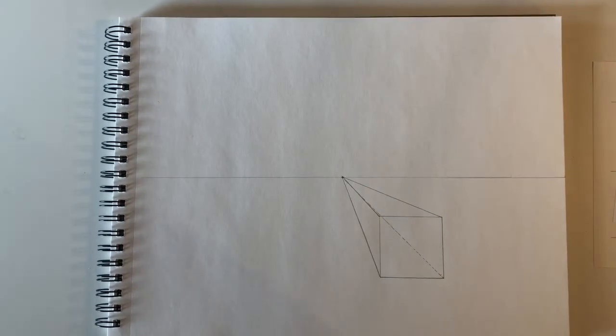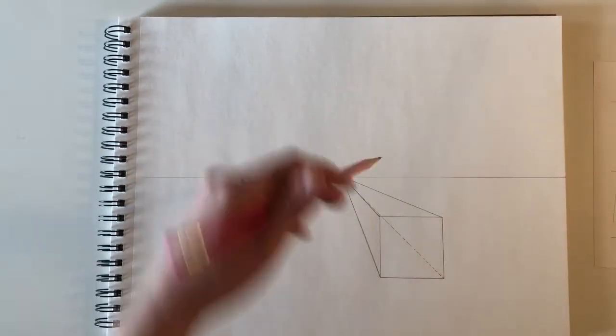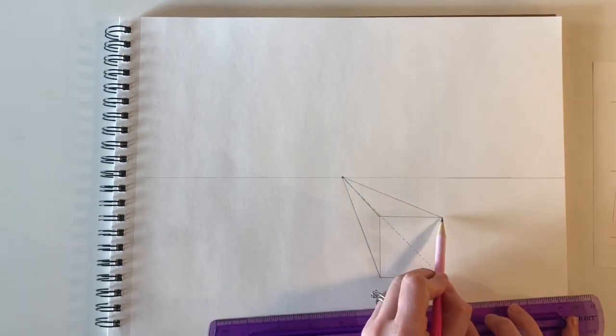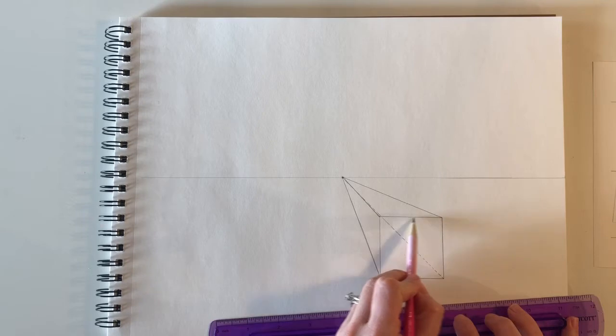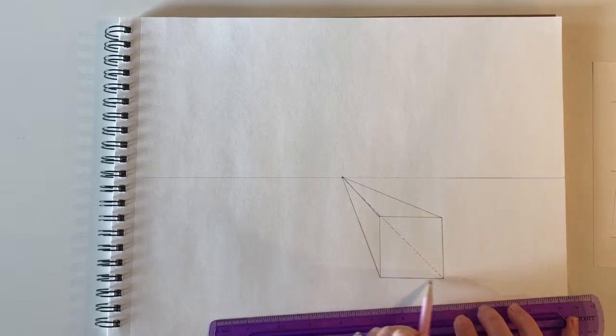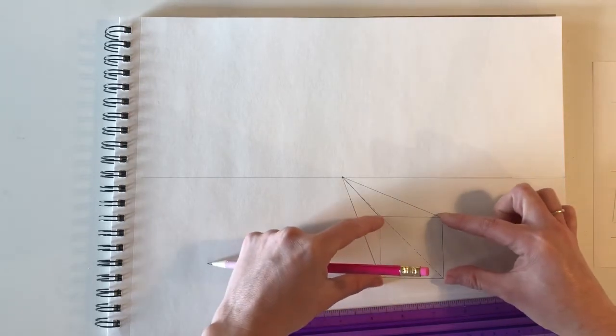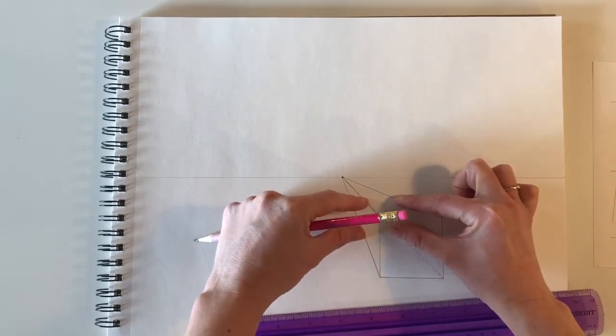Our third step is to draw in the back face of our cube. Whatever shape happens at the front - in this case a square with horizontal, vertical, horizontal, vertical - we're going to do the same exact thing but simply slid back along those diminishing lines to make it further back from us.